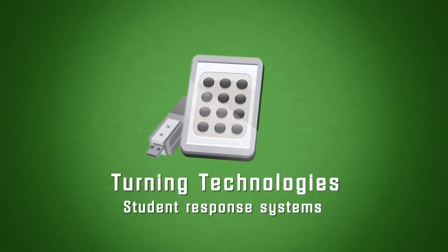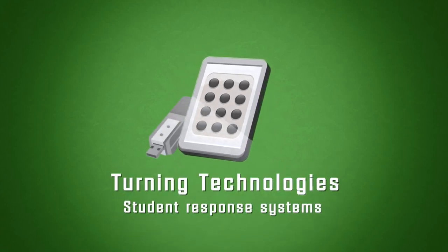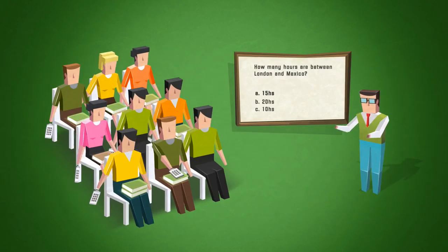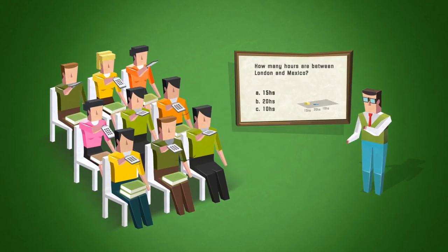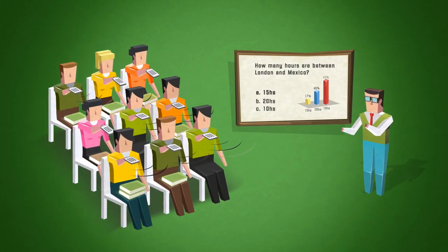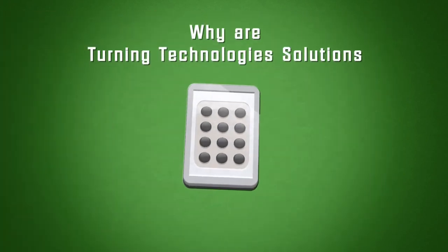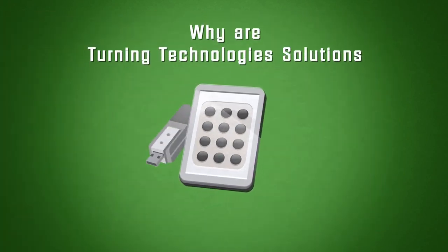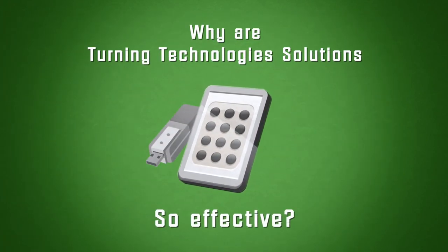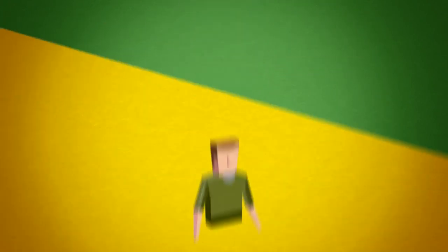According to independent research, using student response systems in the classroom can improve student achievement and test scores by 15 to 30 percent or more. Why are Turning Technologies solutions so effective?